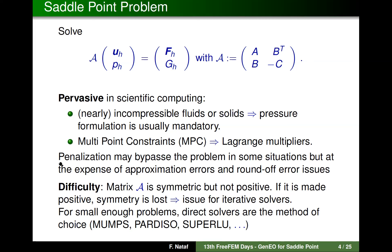One common way to handle extra constraint lines is to introduce Lagrange multipliers, and then once again you have a saddle point problem. In some situations people enjoy penalization because it enables them to bypass the saddle point formulation, but this comes at the expense of approximation errors and round-off issues. So if you want to be safe, it is better to have a saddle point formulation.